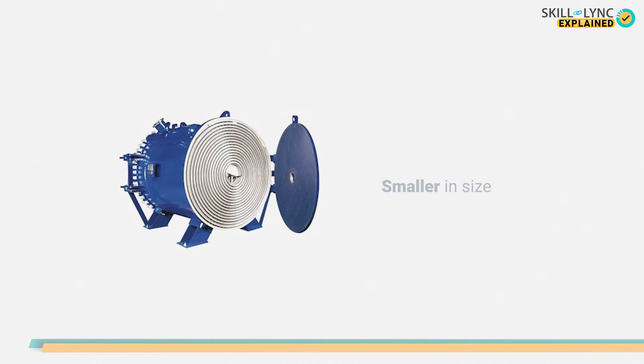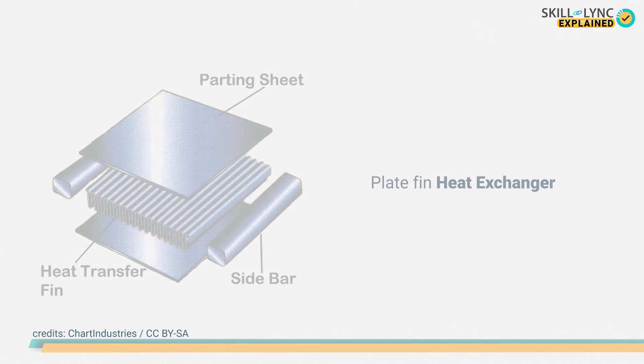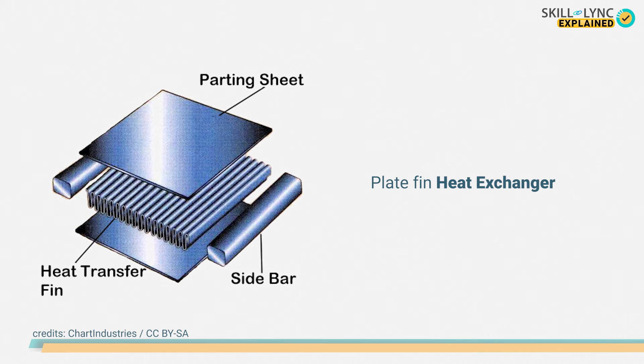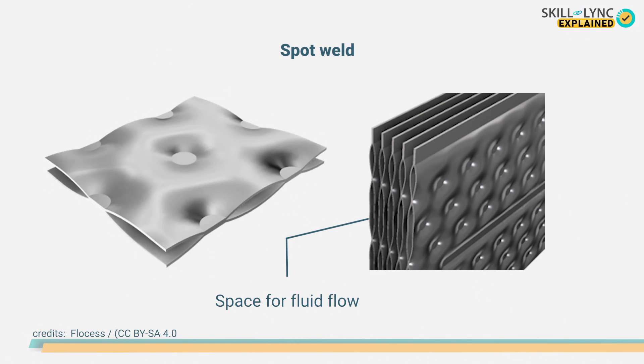The design of heat exchangers can be varied according to the application, thus giving rise to various other types of heat exchangers. For example, a plate fin heat exchanger has fins to increase the efficiency of the unit. They have high heat transfer efficiency and can withstand high pressure as well. As a result, they are used in aircraft engines.